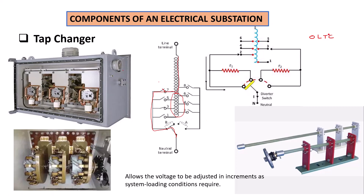One disadvantage of an OLTC system is that it's expensive. Imagine having to do tap changing to maintain regulation while your system is running online — you are not putting your system off. Your consumers are still receiving power while you are actively doing regulation. So it's an expensive system compared to a system where you have to power down everything before you can do your tap changing regulation.